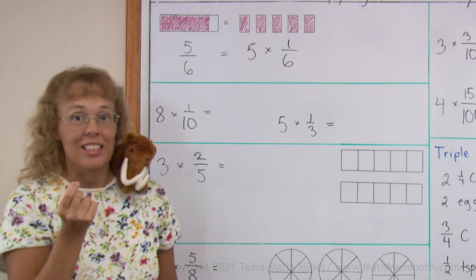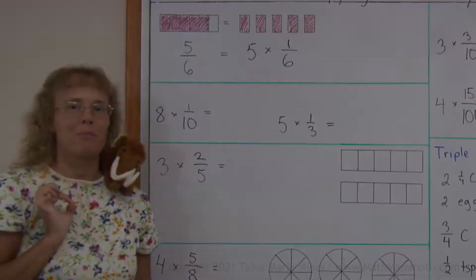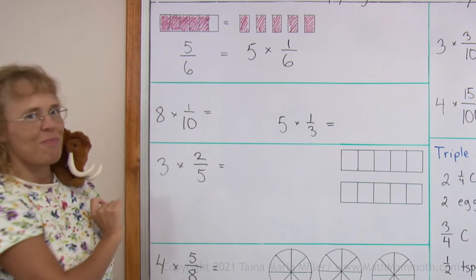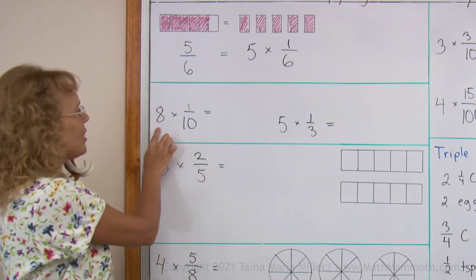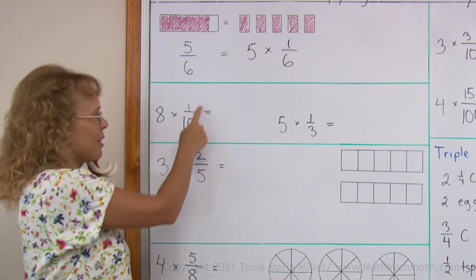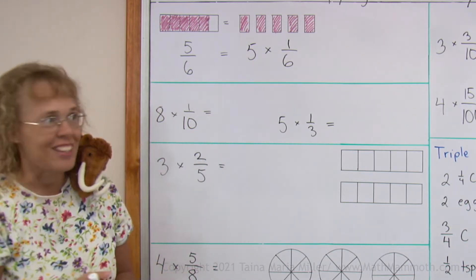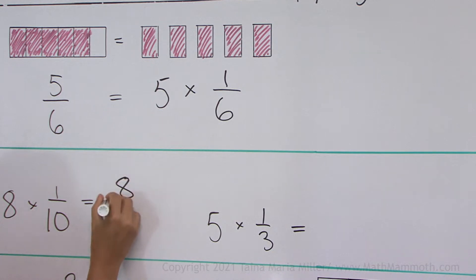So let's use that easy principle now in our next problem. Because here you see 8 times 1 tenth. Think of it as 8 copies of 1 tenth. So what's the answer? Surely it is 8 tenths. As simple as pi, right?